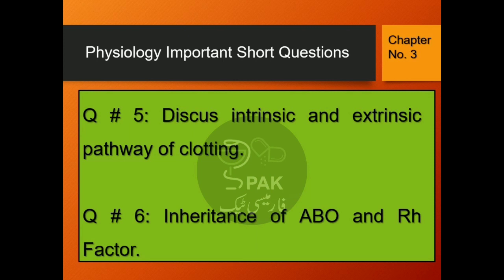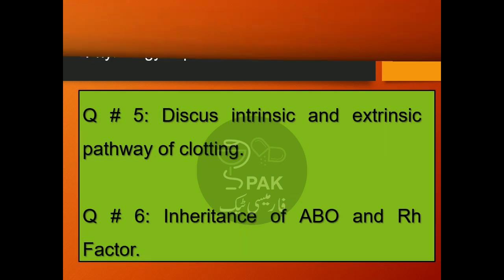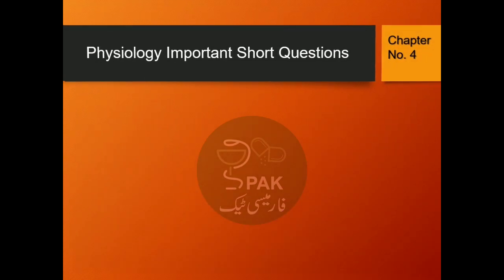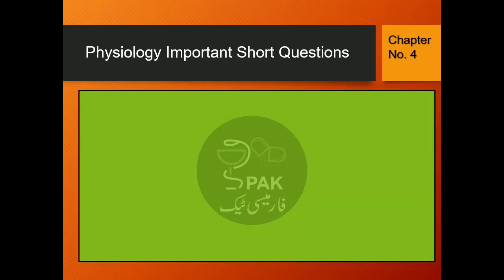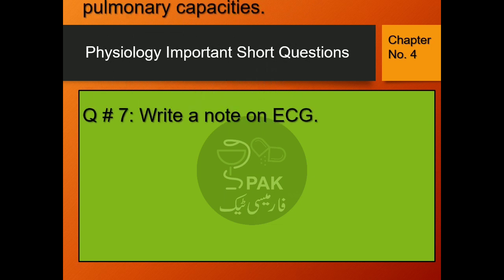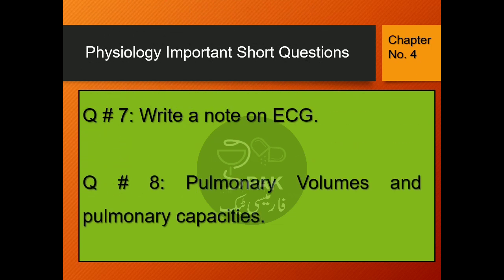Question number 6: Inheritance of ABO and RH factor. Question number 7: Write a note on ECG.